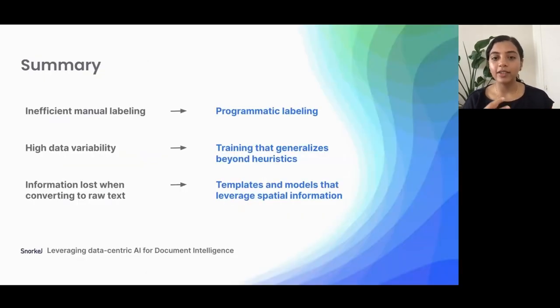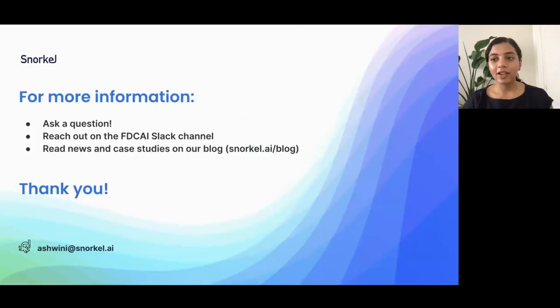So, to conclude, I think with Snorkel, we're able to effectively tackle some of the key challenges involved in document extraction. We're able to move away from inefficient manual labeling using Snorkel's programmatic labeling approach. We can tackle high data variability by using end models that we can train to generalize beyond these heuristics. And finally, we're able to use templates and models that take advantage of the structural information in documents, and use that to extract out complex entities from these documents. So, thank you very much. And please ask questions here or over Slack. And don't hesitate to reach out if you'd like to get any details on any of the concepts that I've described here.